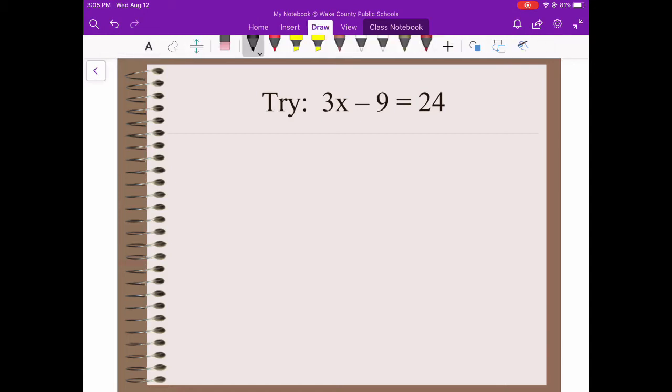We're going to solve for x. That means I want to get x by itself. Reverse order of operations says that I want to get rid of this first. So I'm going to get rid of subtraction. How do I unsubtract? I'm going to do the inverse operation, which is add. So I'm going to add 9 to both sides of this equation.